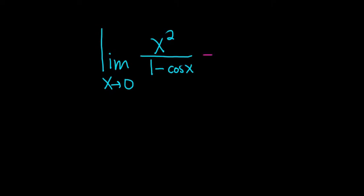So if we plug in 0, we get 0 squared over 1 minus the cosine of 0. So this is equal to 0 over 1 minus, and cosine of 0 is 1, so we get 1 minus 1. So we get 0 over 0.